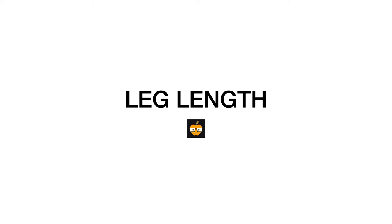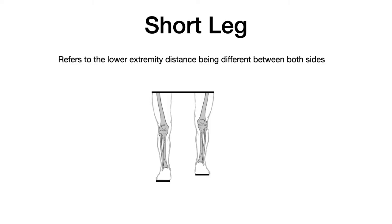In this lesson, we're going to be talking about leg length discrepancies, which give rise to something that's pretty high yield, known as a short leg. A short leg, as the name implies, refers to the lower extremity distance being different from top to bottom when you compare both lower extremities.